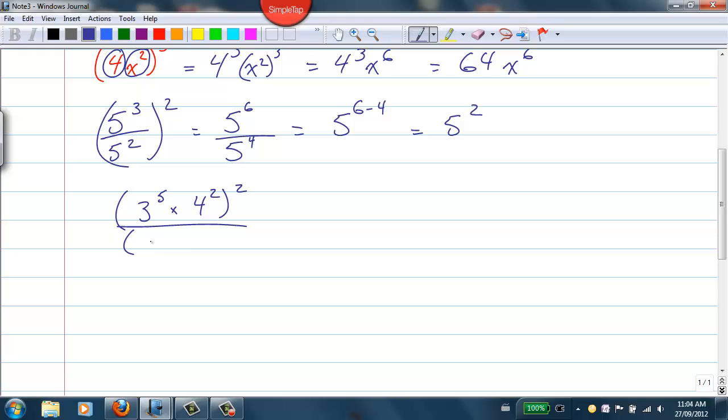Little different now, different bases. 3 to the power of 5 times 4 to the power of 2, I can't multiply those together. The bases are different. But I can use the exponent law to multiply the exponents. So 3 to the power of 10, 4 to the power of 4, 3 to the 12, 4 to the 9.